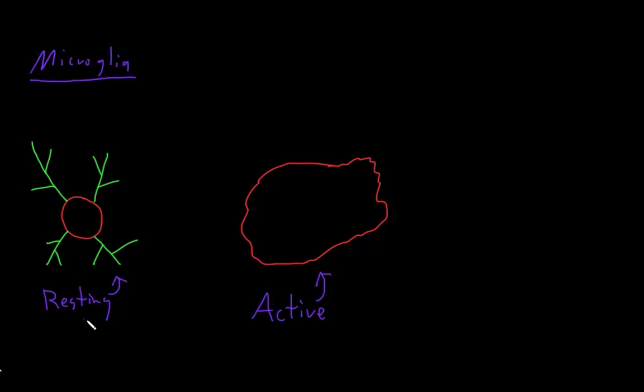When resting microglia do detect that there's trouble going on, they convert into active microglia. They retract all these long branch processes and turn into these blob-like active microglia.